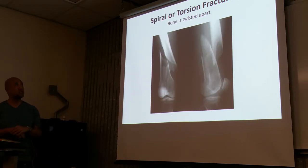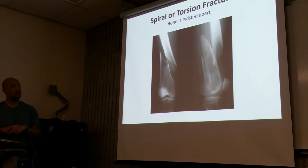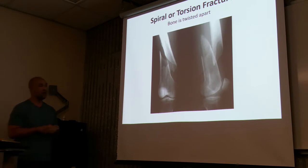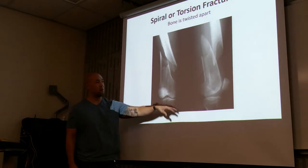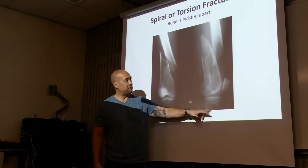Spiral or torsion fracture is where the bone is twisted apart. Which bone is this? This is the femur. Yeah, that's bad.